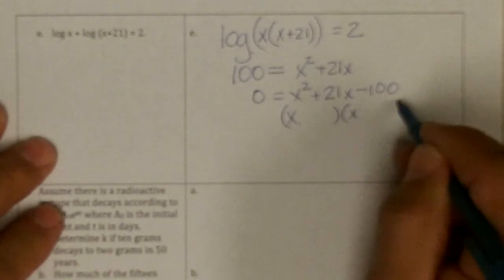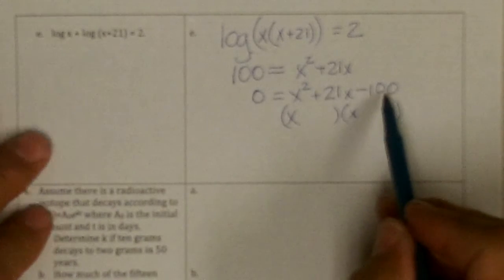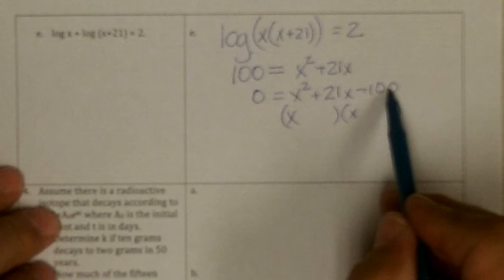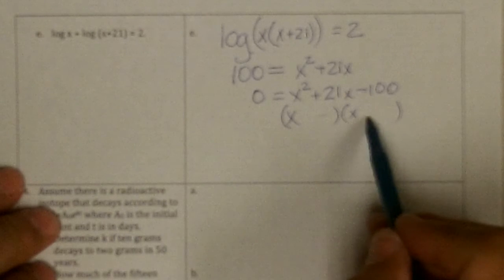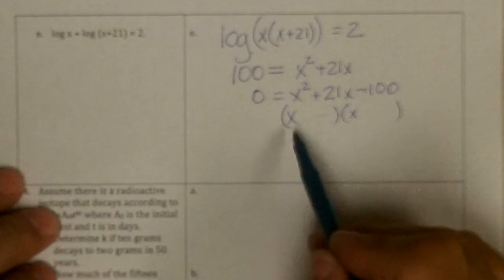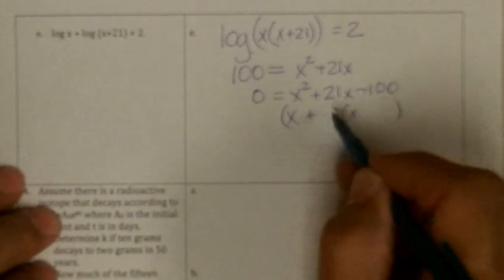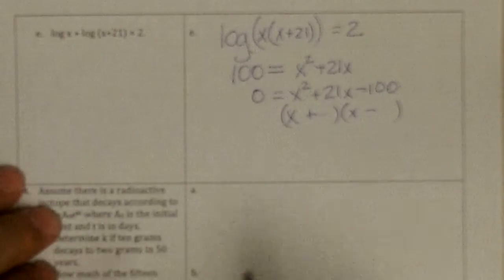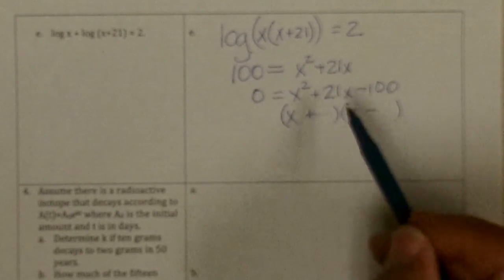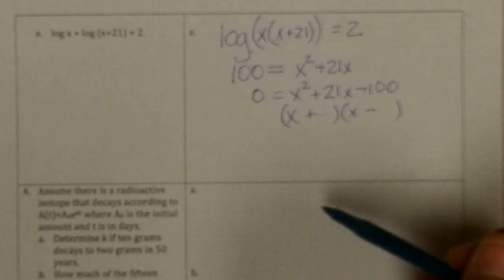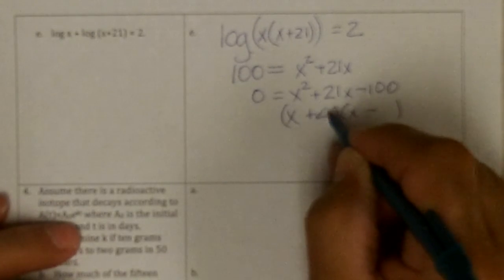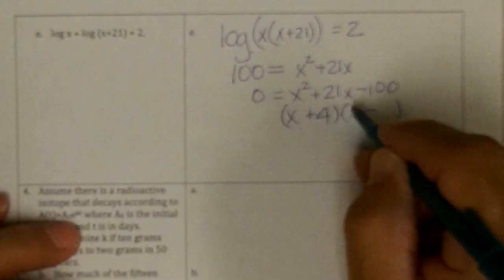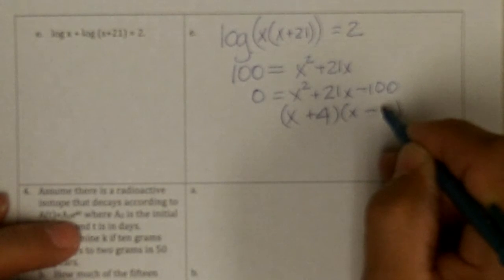x and x. I've got to come up with numbers that multiply to be 100 and subtract, because one's going to be plus and one's going to be minus. I want two numbers that multiply to be 100 and subtract to be 21. And I believe that's 4 and 25.